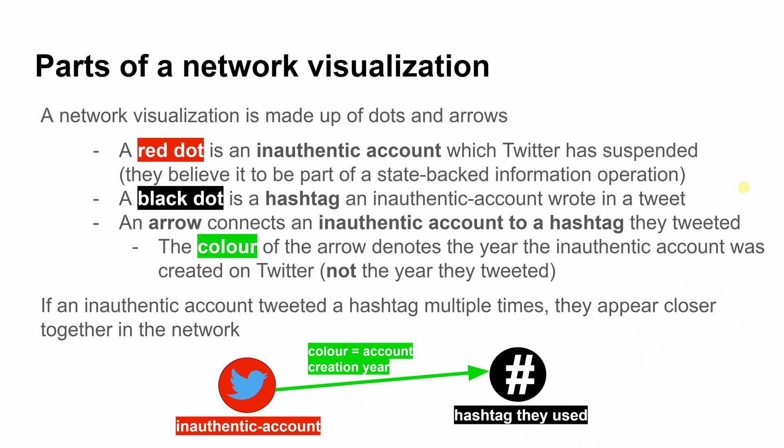Parts of a network visualization: a network visualization is made up of dots and arrows. A red dot is an inauthentic account which Twitter has suspended as they believe it to be part of a state-backed information operation. A black dot is a hashtag an inauthentic account wrote in a tweet. An arrow connects an inauthentic account to a hashtag they tweeted. The color of the arrow denotes the year the inauthentic account was created on Twitter, not the year they tweeted.